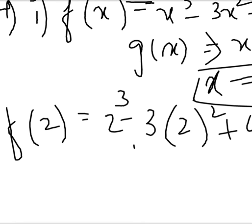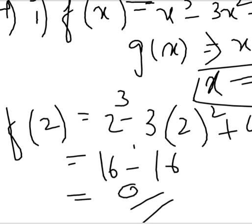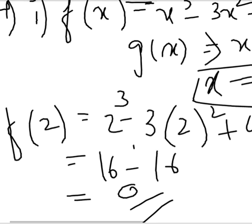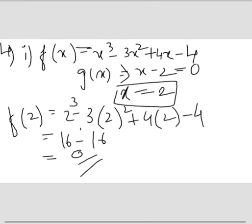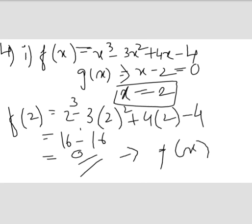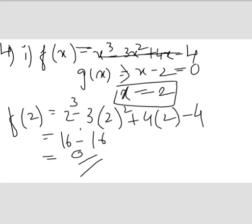...+ 4 × 2 - 4. When you solve it, you get 16 - 16 = 0. If the result is 0, then g(x) is a factor of f(x). So here, x - 2 is a factor of f(x).